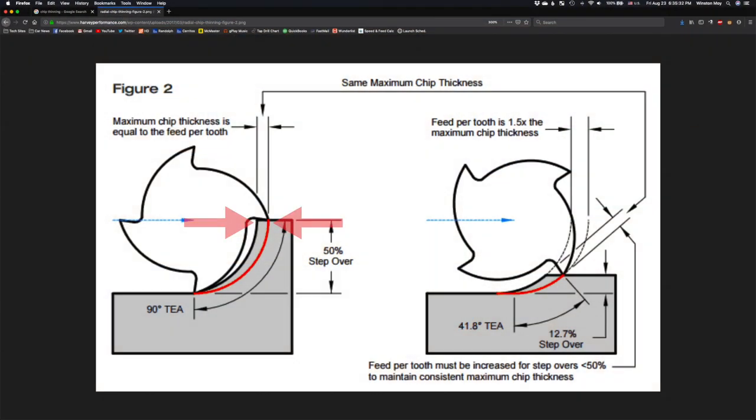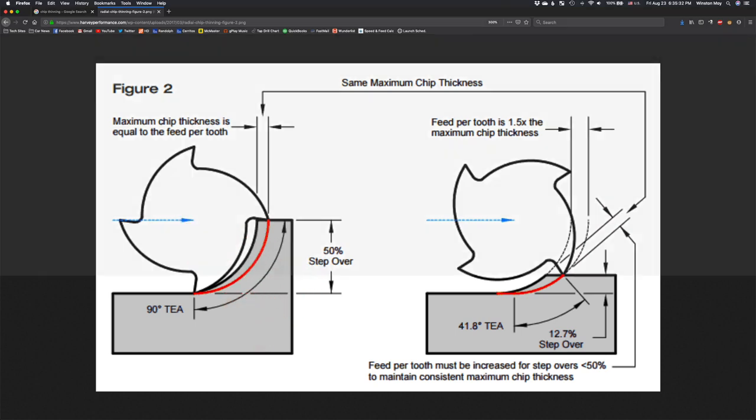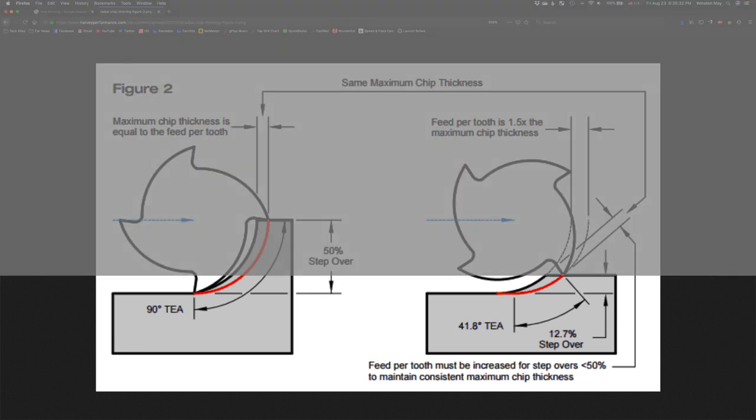Here, look at this graphic from Harvey Tool. Notice how the chip thickness tapers to near nothing at the back of this climb cut. With shallow radial cuts, this top portion of the chip never has a chance to form. So, to make sure the chip you cut starts off thick enough to shear cleanly and sequester heat, you need to feed forward faster.